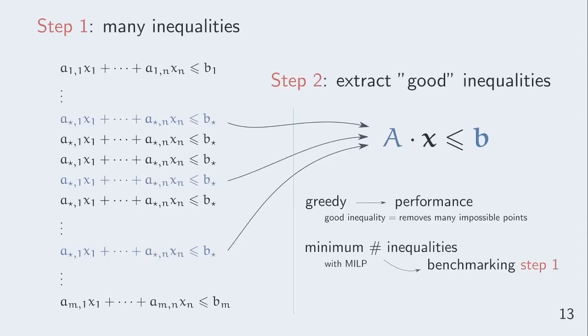This question is usually answered in two steps. The first step aims at computing many correct inequalities and the second step will try to choose just some of them that are good enough for the final modeling. There are two approaches for this second step. The greedy one which aims at keeping the inequalities that remove many impossible points and the minimum one which aims at getting the smallest model possible.